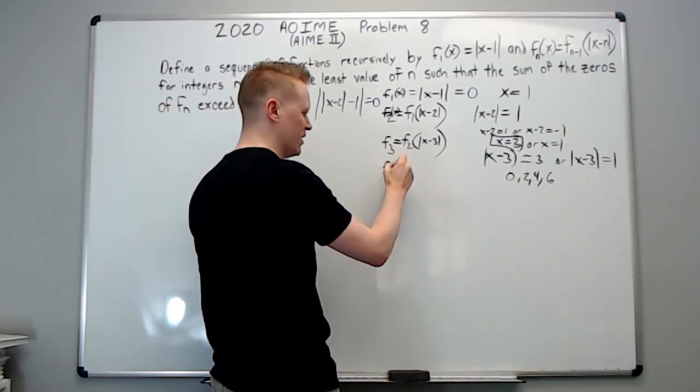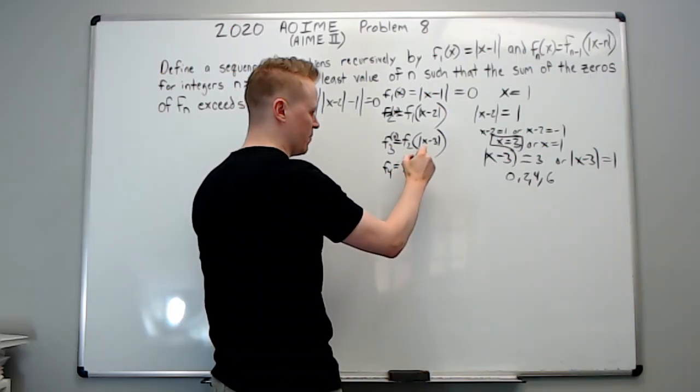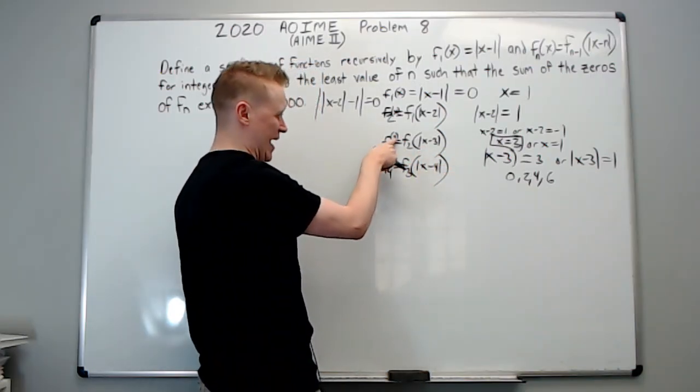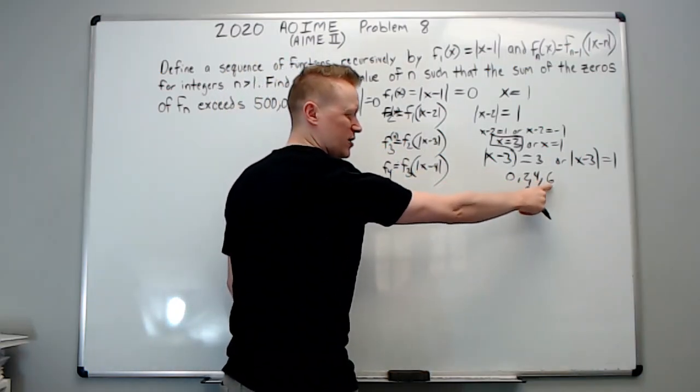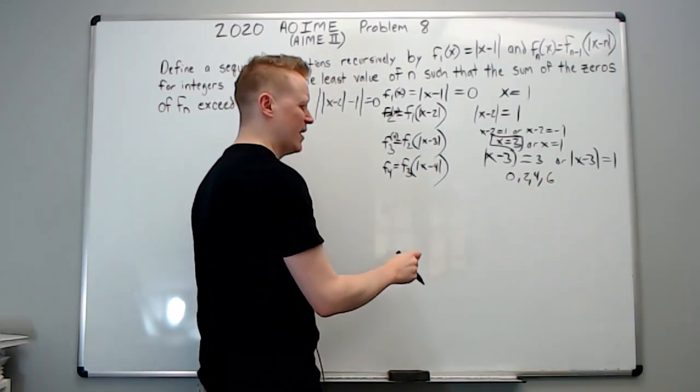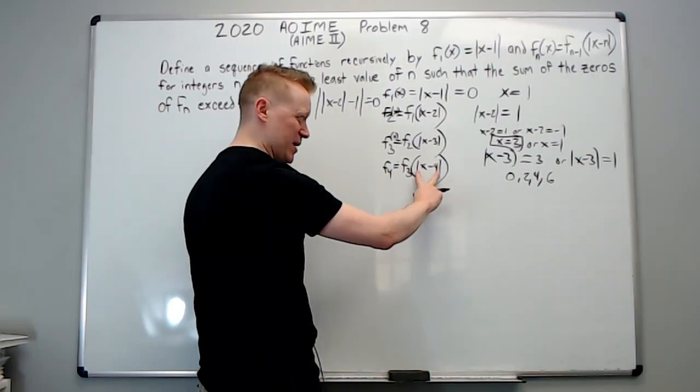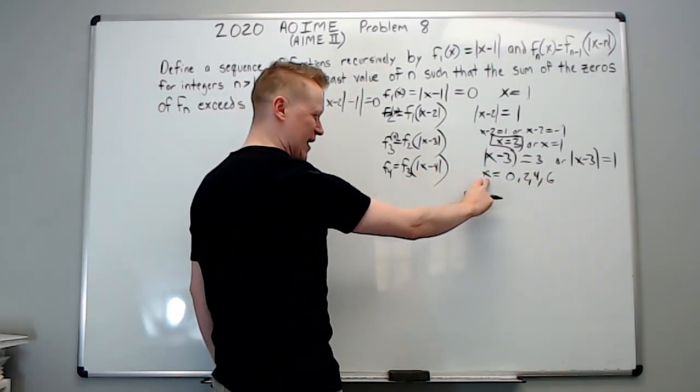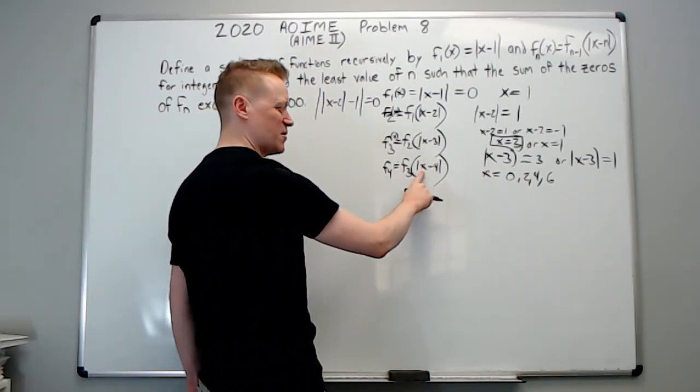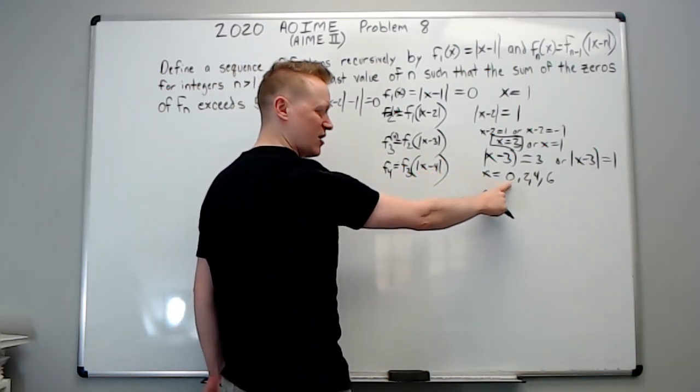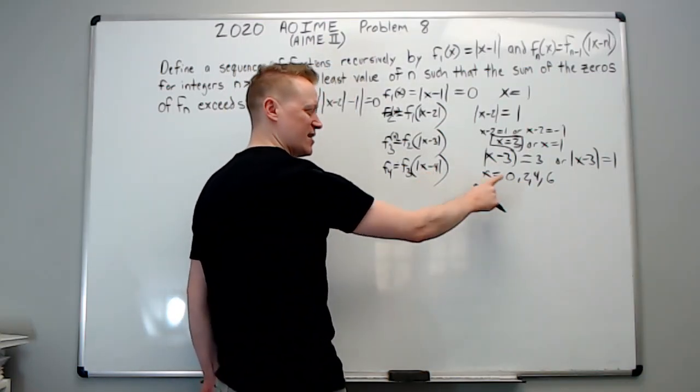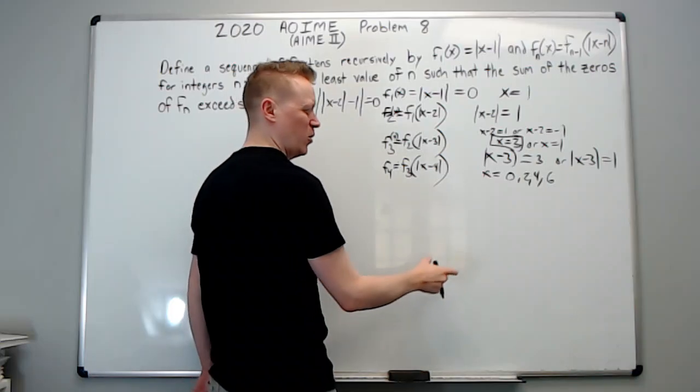F sub four, again this is of X, is equal to F sub three of X minus four. And again, the X here was zero, two, four, and six. Okay, then I need this to become the X. X was these values. This becomes that X. Now I say the distance between X and four is zero. And the distance between X and four is two. Distance is four and distance is six. Well, these are going to hit all the numbers in between. If the distance between X and four is zero, then X is four.